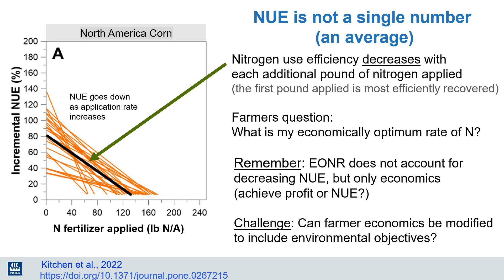So how much nitrogen should a farmer apply? Generally this question is answered by estimating what we call the economically optimum rate of nitrogen application. That considers both the price of nitrogen fertilizer and the expected prices for the harvested crops, and seeks to maximize the profit for the farmer. This is primarily an economic question and does not account for environmental leakage or nitrogen use efficiency.